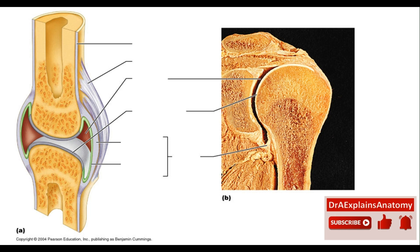Hello, everyone. Let's label together the structures on the blank figures of the synovial joint structure, the knee joint, and the hip joint. Starting with the first blank figure, this represents the structure of all synovial joints.